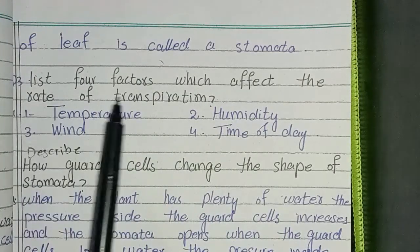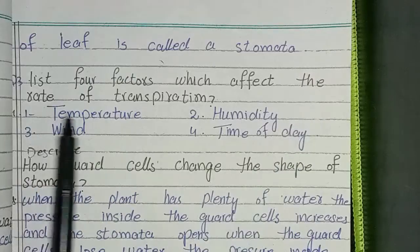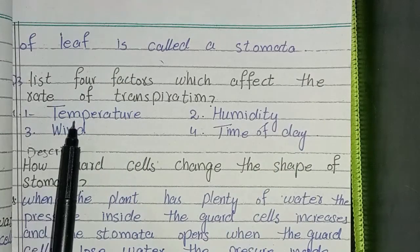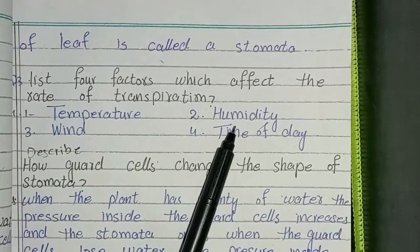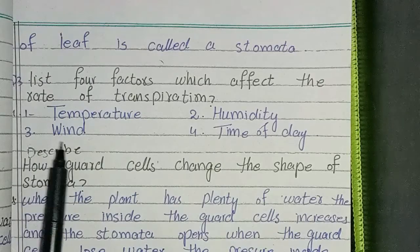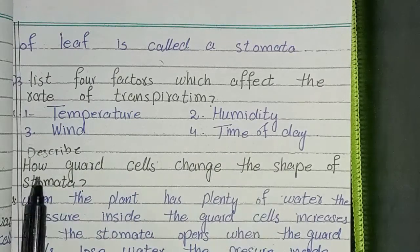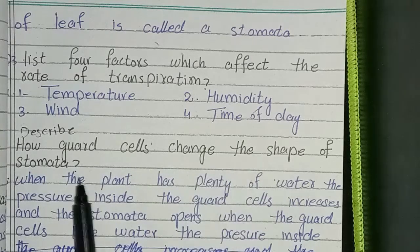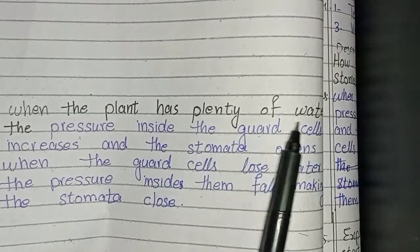Third question: List four factors which affect the rate of transpiration. Number one: temperature. Number two: humidity. Number three: wind. Number four: time of day. Fourth question: Describe how guard cells change the shape of stomata.